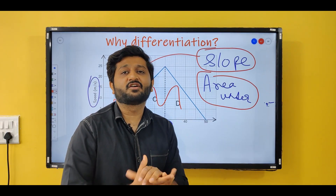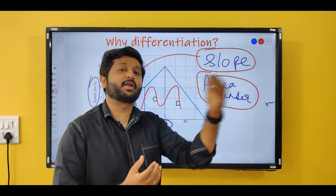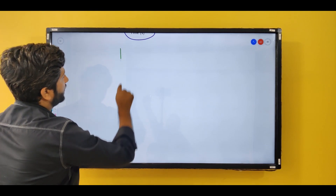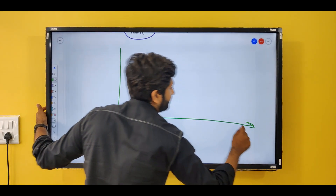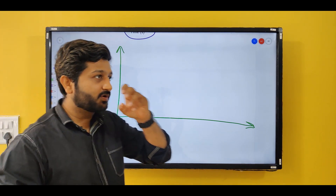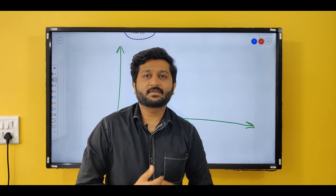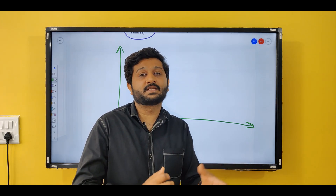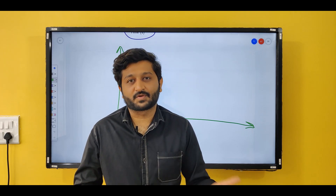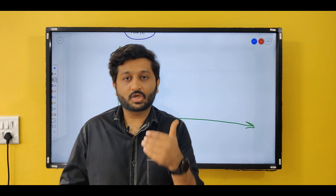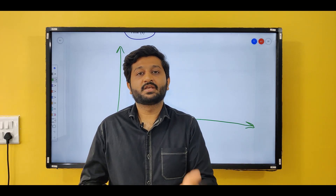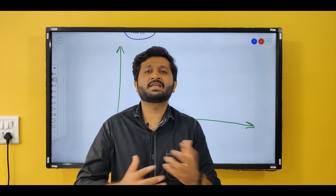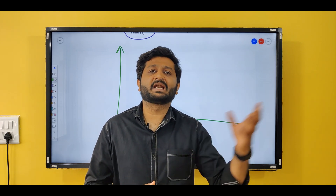Now let us take one more example — a speed-time graph of another journey. The problem with the previous graph was that it showed uniform motion: covering equal distance in equal intervals of time. But in practical life this is not possible. Your car speed increases when you leave home, decreases at a signal, and in traffic the speed continuously increases and decreases, so it can never form a straight-line graph.